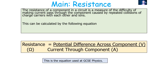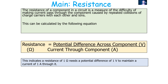The resistance of a component in a circuit is a measure of the difficulty of making current pass through it, caused by the repeated collisions of charge carriers with each other and with ions. It is calculated as: Resistance (in Ohms) = Potential Difference across the component (in Volts) ÷ Current through the component (in Amps). This is an equation from GCSE. A resistance of one Ohm requires a potential difference of one volt to maintain a current of one amp through it.